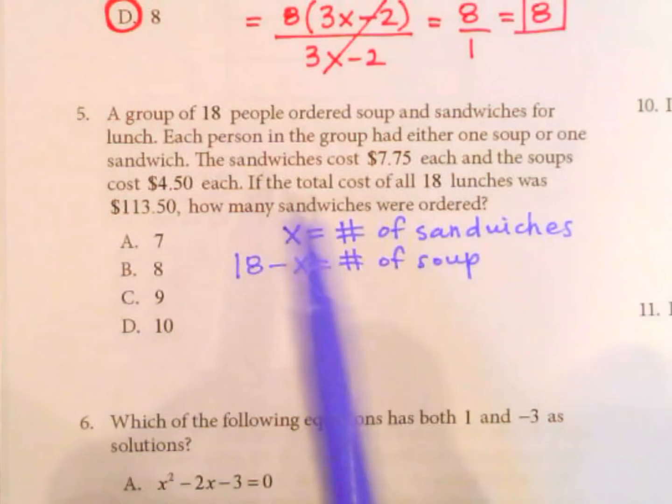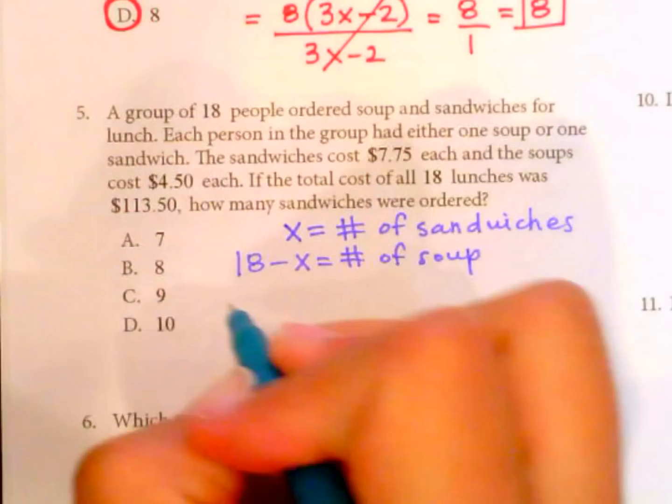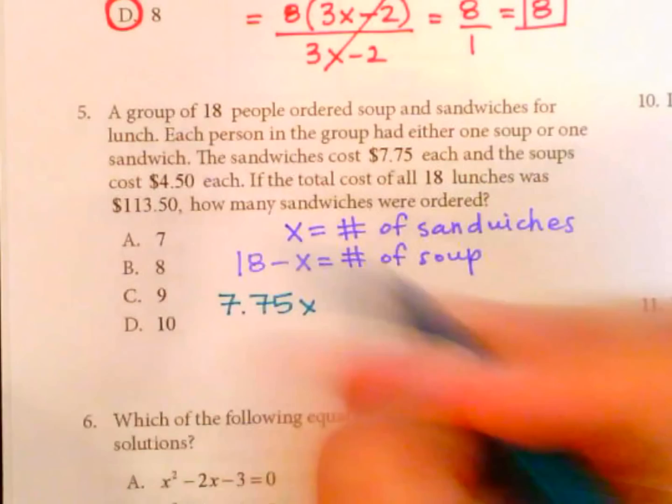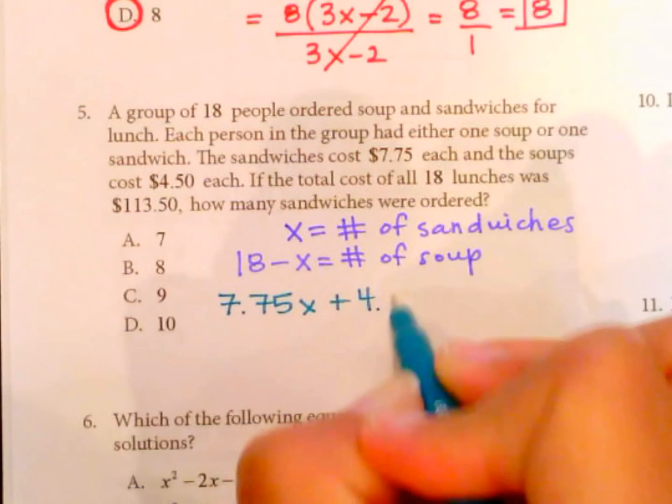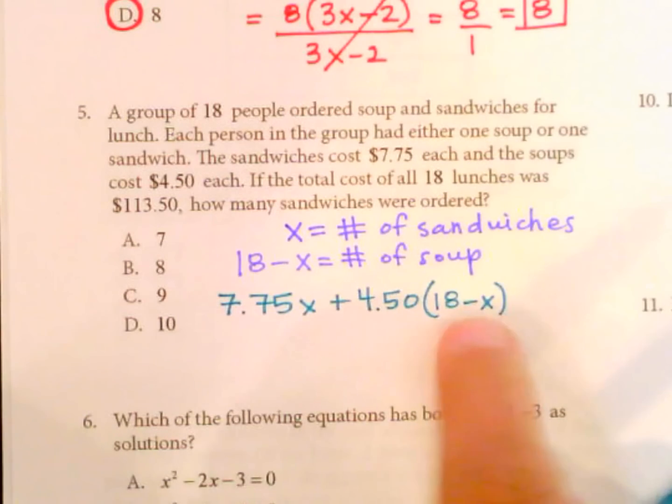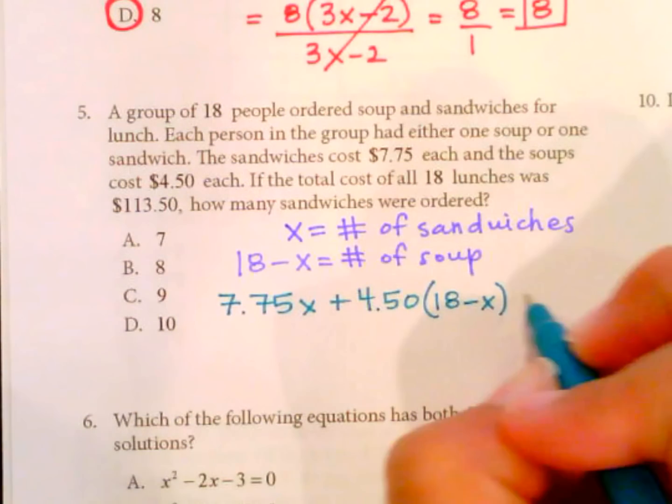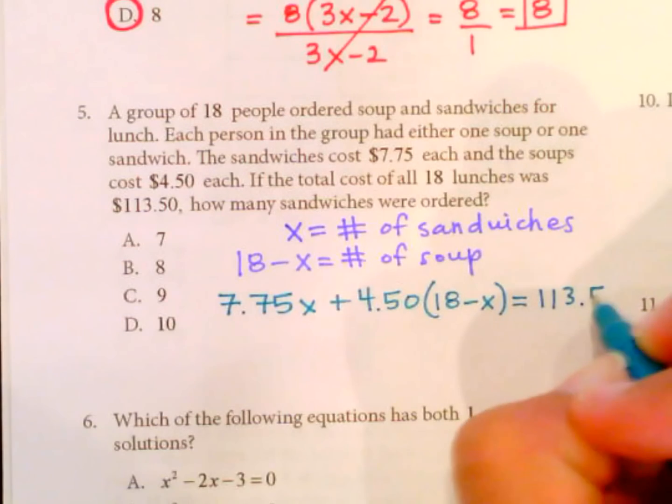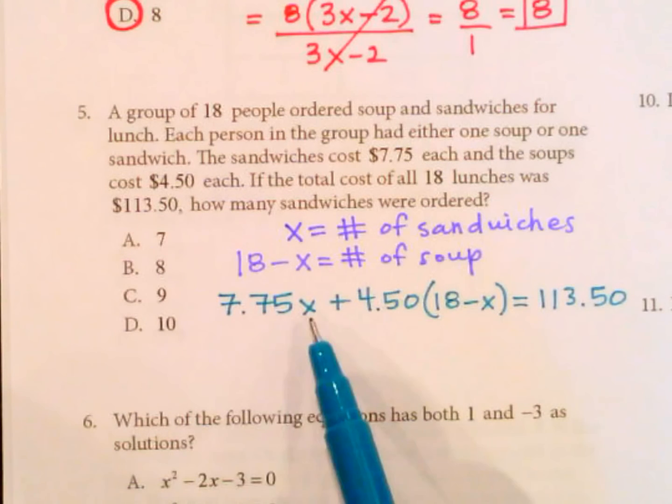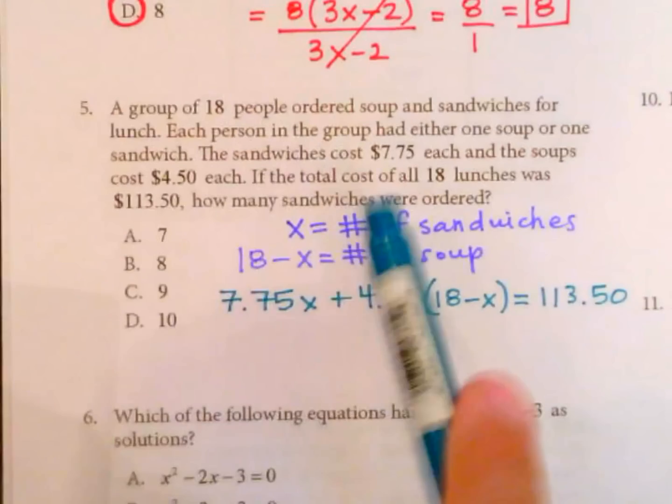Okay, so the sandwiches cost $7.75. So we can say $7.75 times x for sandwiches. The soups cost $4.50, so plus $4.50 times the number of soups, which is of course going to be the difference from 18 of the sandwiches, makes a total of $113.50. So now we have an equation, $7.75 for each sandwich, $4.50 for each soup, made a total of $113.50. So now we can distribute and solve for x and see how many sandwiches we ordered, which is what we're looking for.